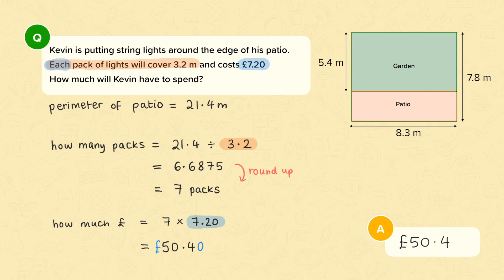So finally, to recap, what we've done is first find the perimeter of the patio. Then divide by 3.2 to work out how many packs of lights. And remember at this point we rounded up to the next whole number because you can only buy a whole number of packs of lights. Then finally, when we knew how many packs we needed, we multiply it by the price per pack. And that gave us this final answer of £50.40. Thank you.